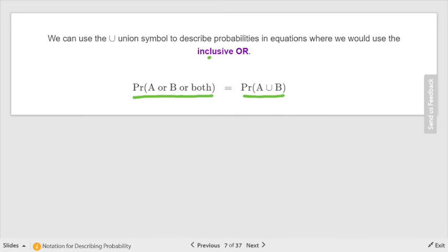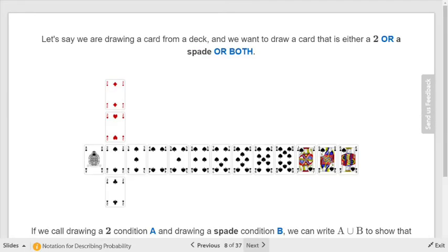That means a joining together of anything that would fit in any of those categories. It's important you understand those words, and and or, so that you know which symbols to use and which things to include and which to exclude from your probability.